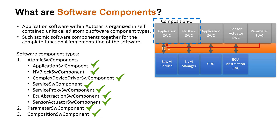Composition software component is again a non-functional component type. It can be imagined as a container in simple terms that can have an aggregation or collection of software components. They are used to cluster components based on functionality, and a composition can also cluster other compositions as well. Compositions do not have a separate implementation C file, but they have an important set of configurations for the components they hold and the communication between them. There is a separate video on this available in the description.